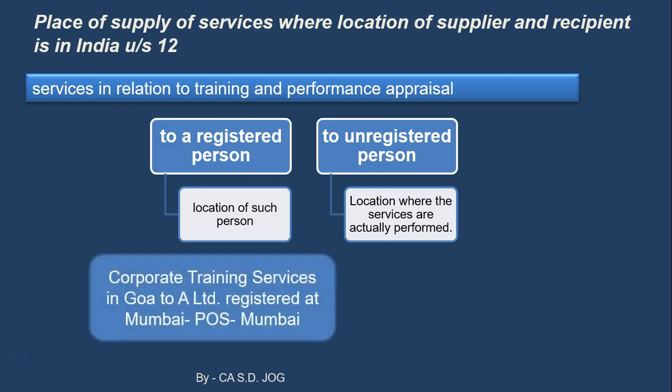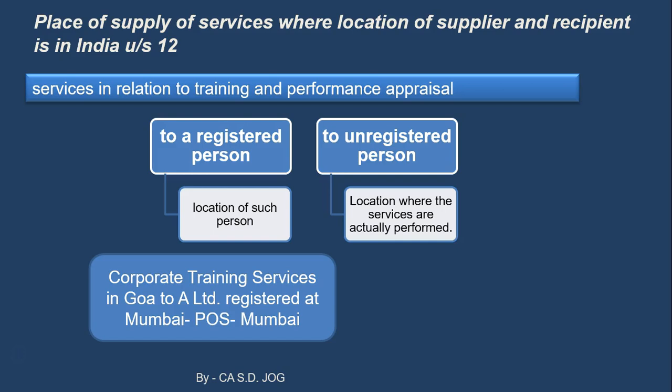Example: Corporate training services are conducted in Goa for A Limited, which is registered at Mumbai. The place of supply will be the location of the registered person, i.e., Mumbai. Whereas if Mr. A, who is unregistered, also joins the same training program in Goa, the place of supply for Mr. A will be Goa — where the services are actually performed — because A is unregistered.